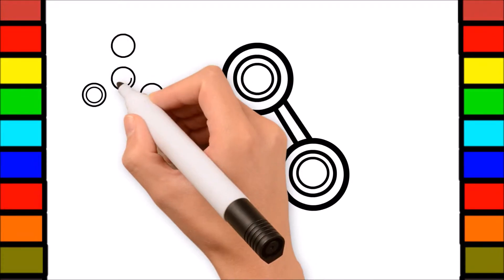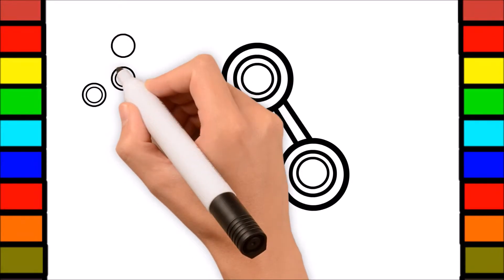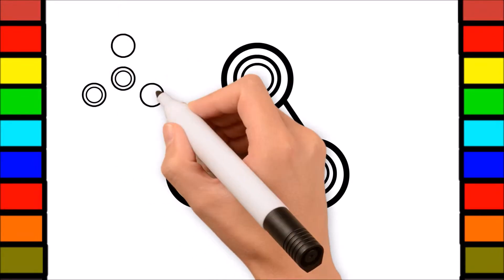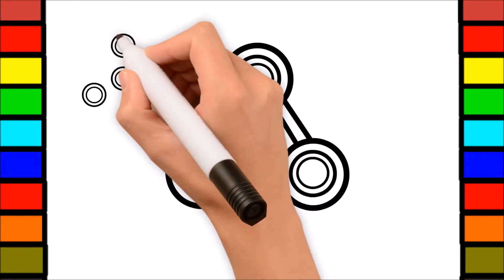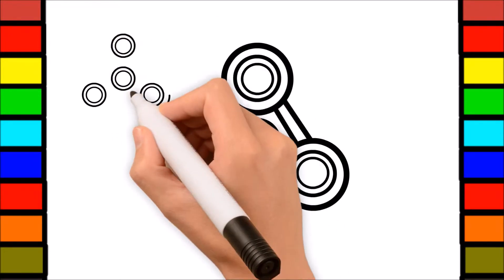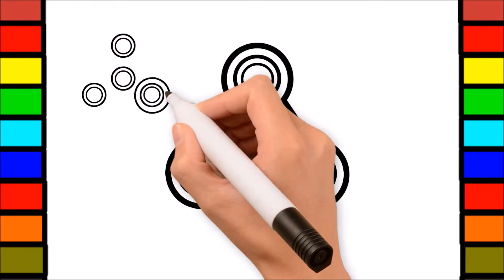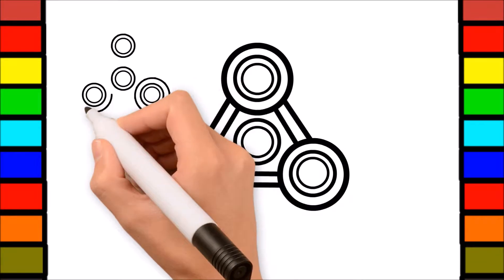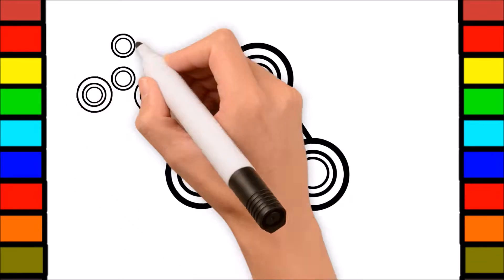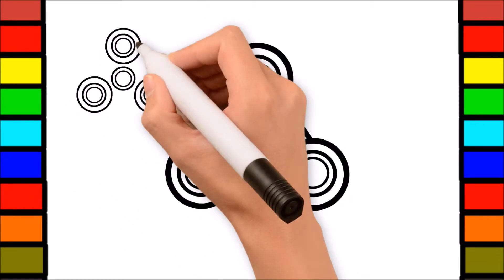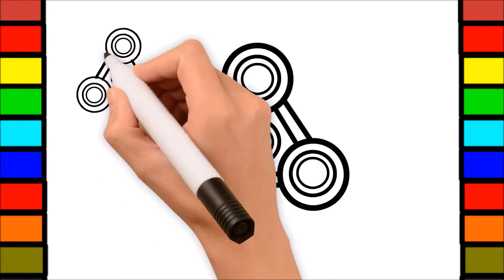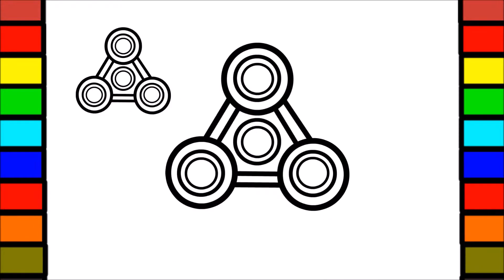A, B, C, D, E, F, G, H, I, J, K, L, M, N, O, P, Q, R, S, T, U, V, W, X, Y, and Z. Now I know my ABCs, next time won't you sing with me?